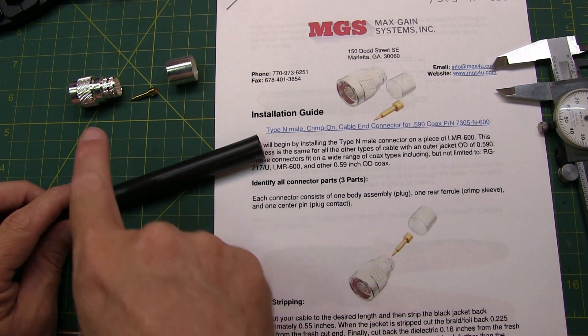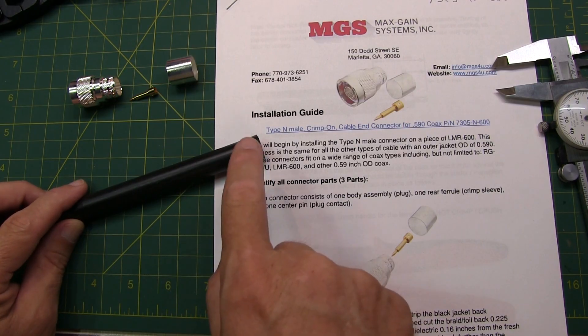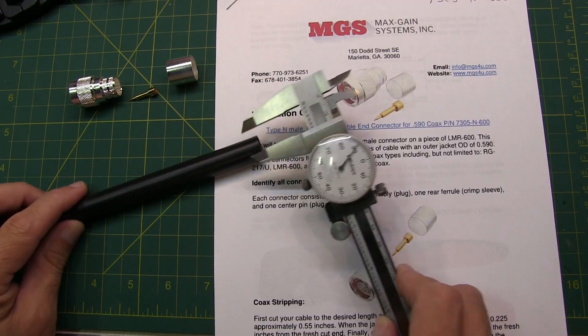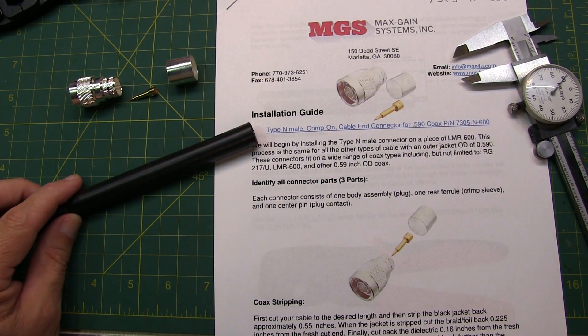This video is going to show how to install an N-male crimp-on style coaxial connector onto 0.59 inch diameter coax, such as LMR600 or RG217.